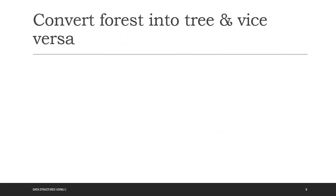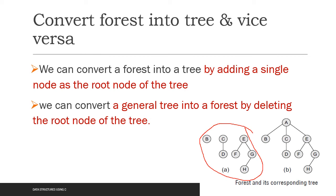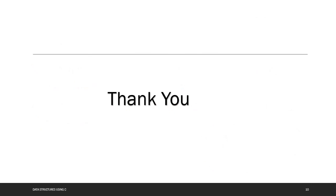Next, we look at how to convert a forest into a tree and vice versa. We can convert a forest into a tree by adding a single node as the root of the tree. In the opposite direction, we can convert a general tree into a forest by deleting the root node of the tree. In this video we have covered what a general tree is and what a forest is.